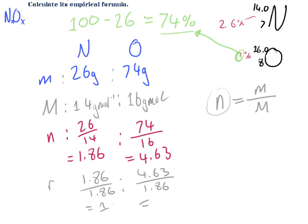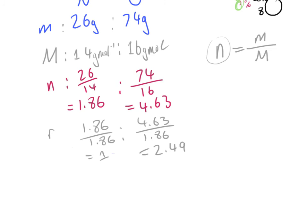Since 2.49 is still not a whole number, I'm going to multiply both of these values by 2. This converts nitrogen's ratio to 2, and oxygen's to 4.98. Looking at 4.98, this is really close to 5, so I'm going to round it to 5. The ratio is now 2 to 5.